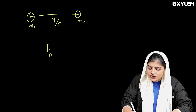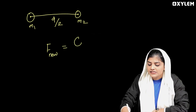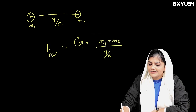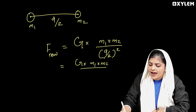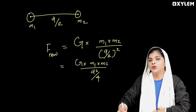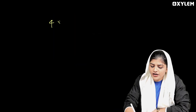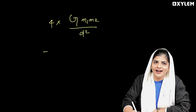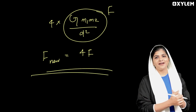So the new force is G into M1 into M2 divided by (D/2) squared, which equals G into M1·M2 divided by D squared over 4. This gives us 4 into G into M1·M2 divided by D squared. Therefore, F new equals 4F. The gravitational force becomes 4 times the original when the distance is halved.